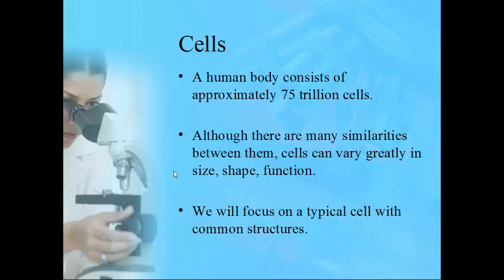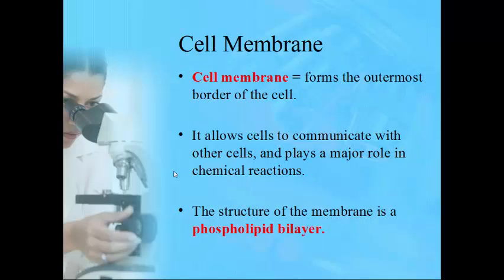There are some similarities between all these cell types — the structures that are there and what those particular structures do. The cells can vary greatly in their function, size, and shape. For this chapter, we'll talk about a very generic composite cell with very common, typical features.